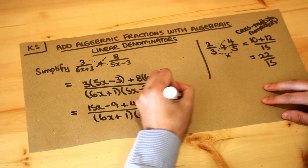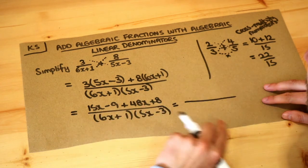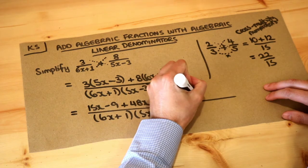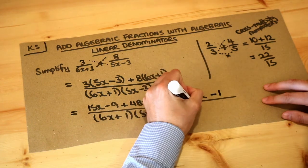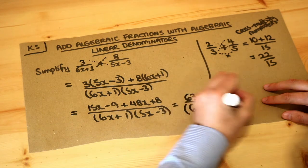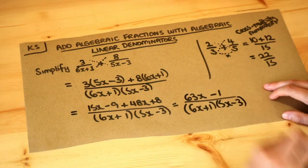And then our final answer, if we collect like terms: 15x+48x is 63x, and -9+8 is -1. Leave the denominator as it is, and that is the final answer.